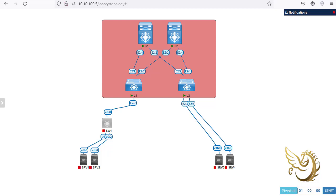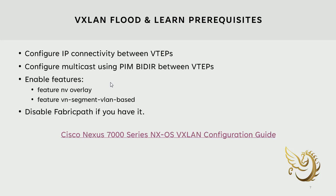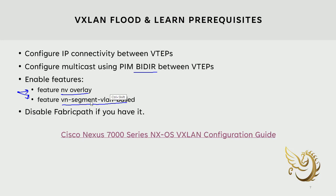We use bi-directional multicast, which is more scalable. There are features that need to be enabled on almost all devices: nv overlay and vn-segment VLAN-based — these are necessary to enable VXLAN. If you have Fabric Path, you need to disable it because Fabric Path and VXLAN are mutually exclusive. Regarding the order of enabling features: enable nv overlay first, otherwise vn-segment may not enable properly. In the next video, I'll start the configuration and show you how to enable VXLAN flood and learn in your network.